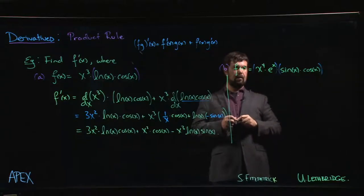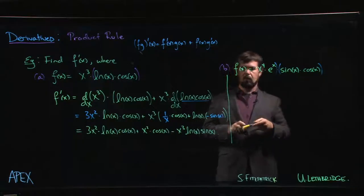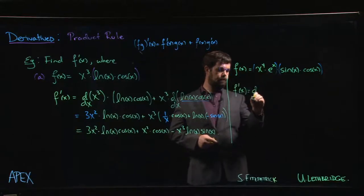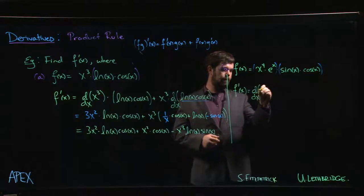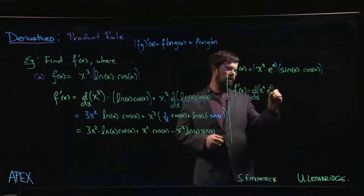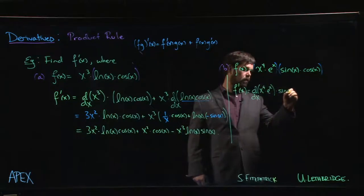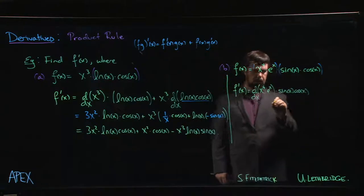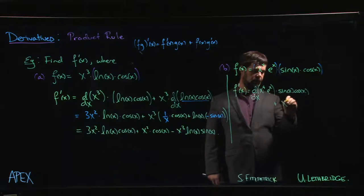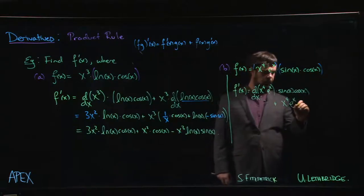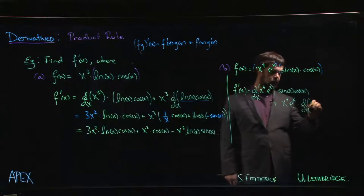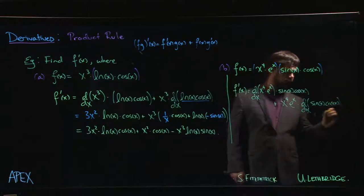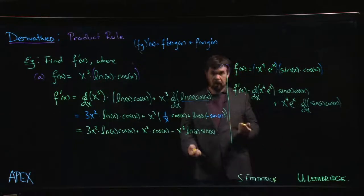So f'(x) is going to be the derivative of (x⁴ · eˣ) times (sin x · cos x), plus x⁴ · eˣ times the derivative of (sin x · cos x). Then we apply the product rule again to each piece.